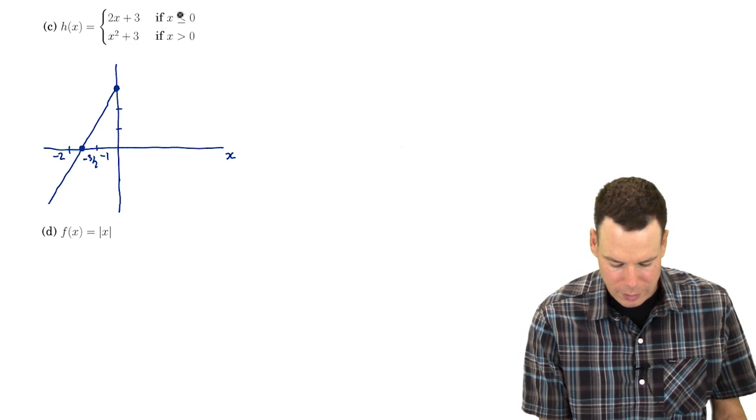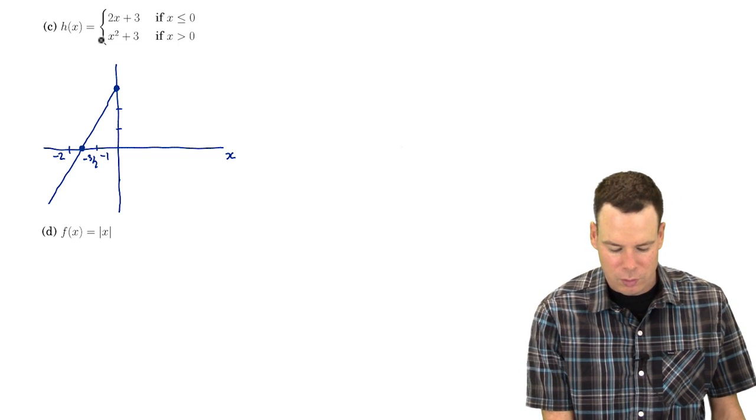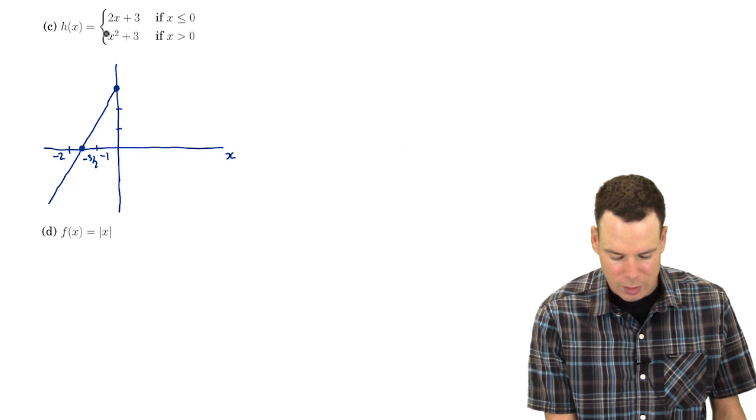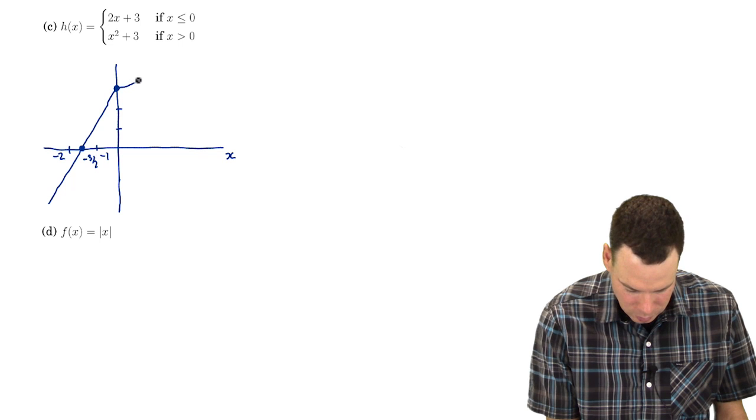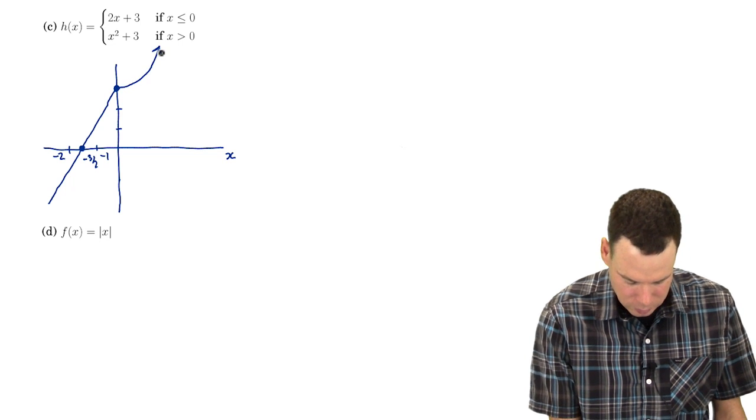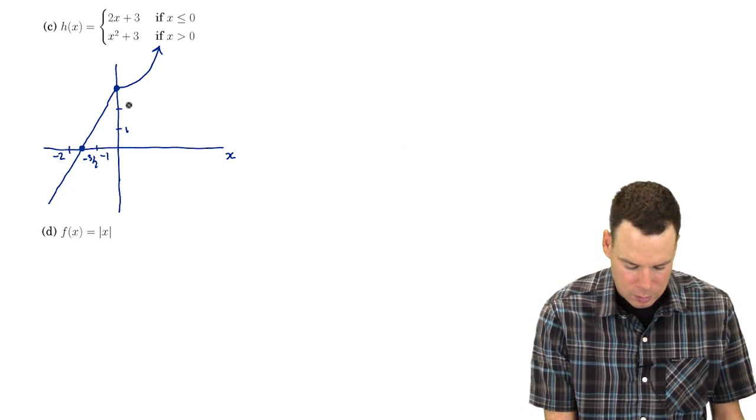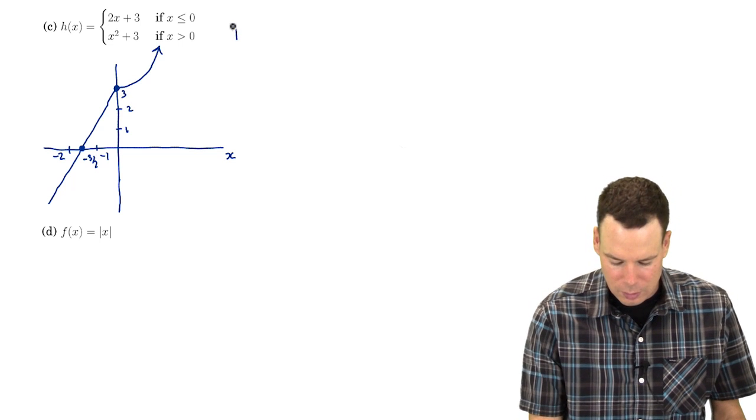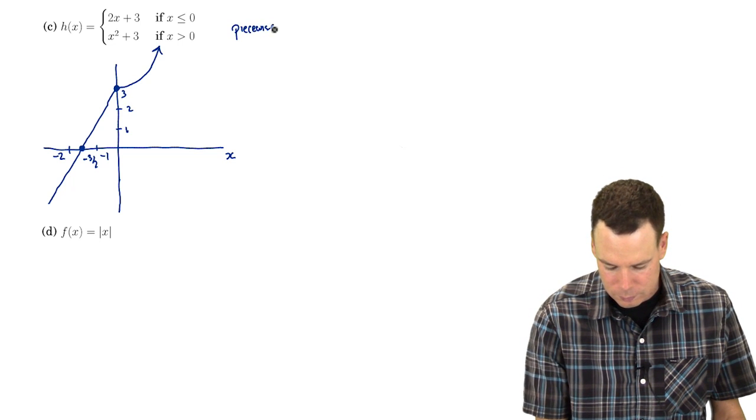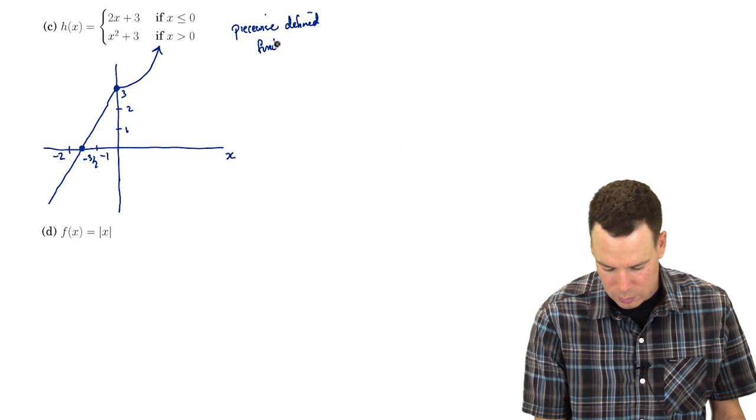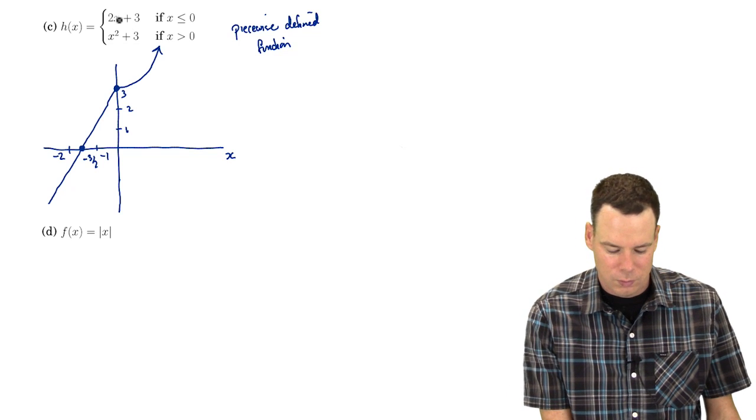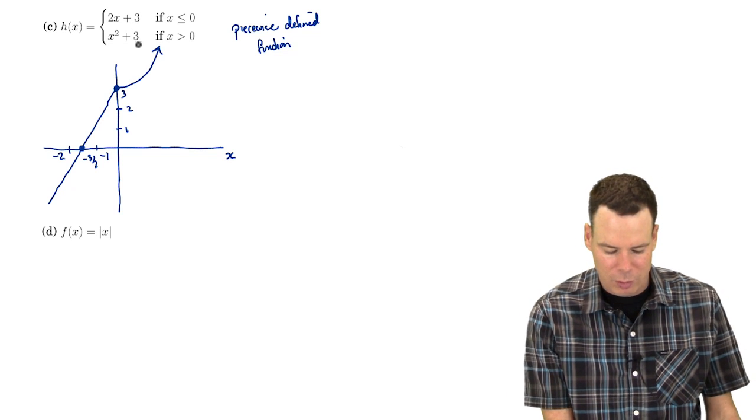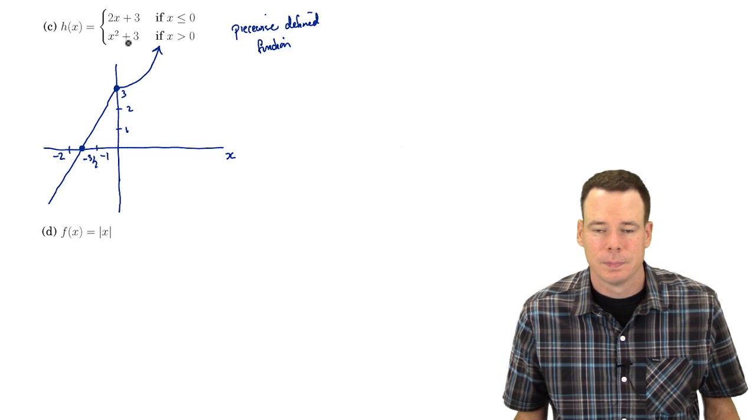There's our first portion. What happens when x is less than or equal to 0? When x is bigger than 0, it's a parabola opening upwards, shifted up 3 units. So it's actually going to join up with this one and then continue on opening up. And so there is our graph. And as I said, this is called a piecewise defined function. Meaning that it's a function defined in pieces from elementary functions, pieces of elementary functions, linear functions and quadratics in this case.